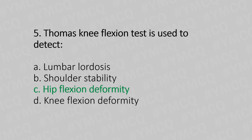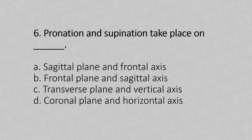Sixth question: Pronation and supination take place on — Option A: sagittal plane and frontal axis. Option B: frontal plane and sagittal axis. Option C: transverse plane and vertical axis. Option D: coronal plane and horizontal axis. The answer is Option C, transverse plane and vertical axis.